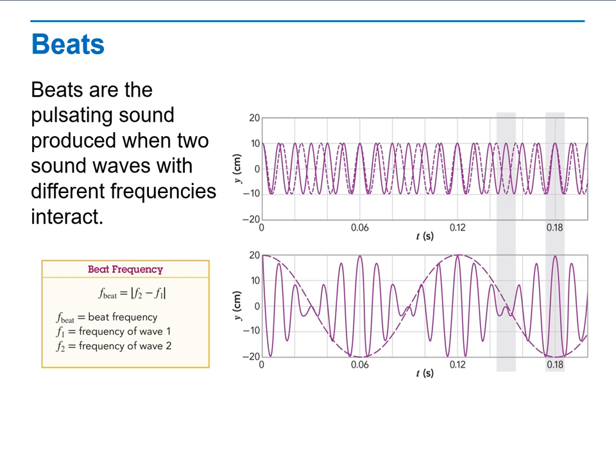Where on the graphs would you expect to correspond with loud versus soft sound? Yes. The area with highest amplitude is the area of loudest sound, the result of constructive interference. Here, we have soft sound from destructive interference.